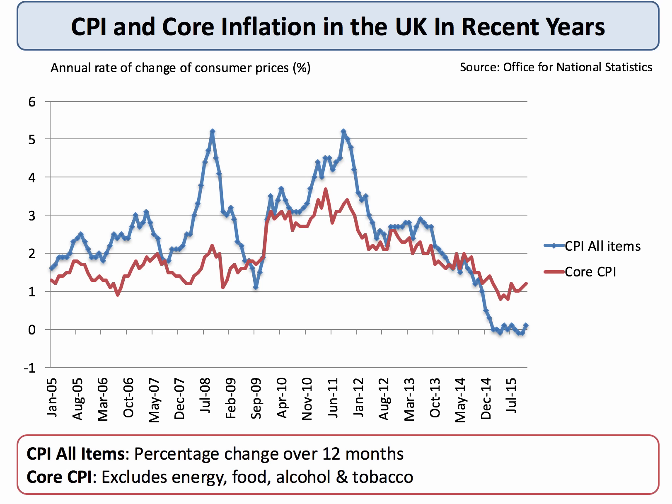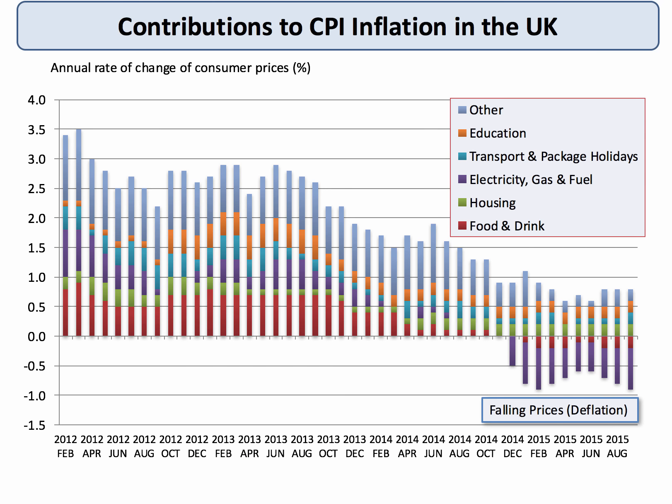Don't worry too much about this point, but it does show that some items in the index are more volatile than others. For example, in 2015 energy bills were falling, and of course that was bringing down the overall rate of inflation.